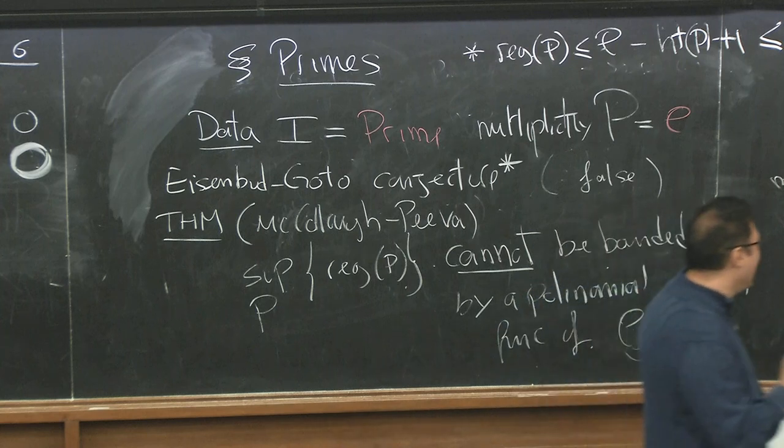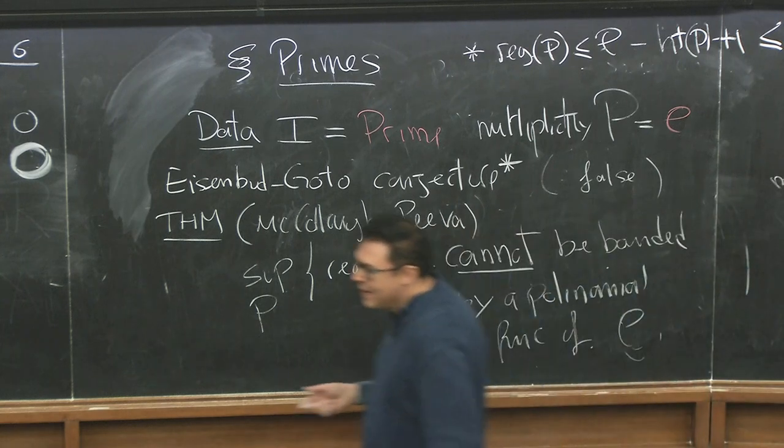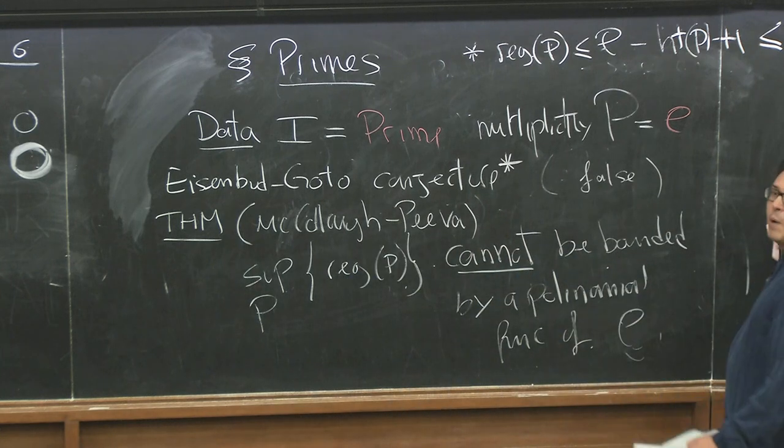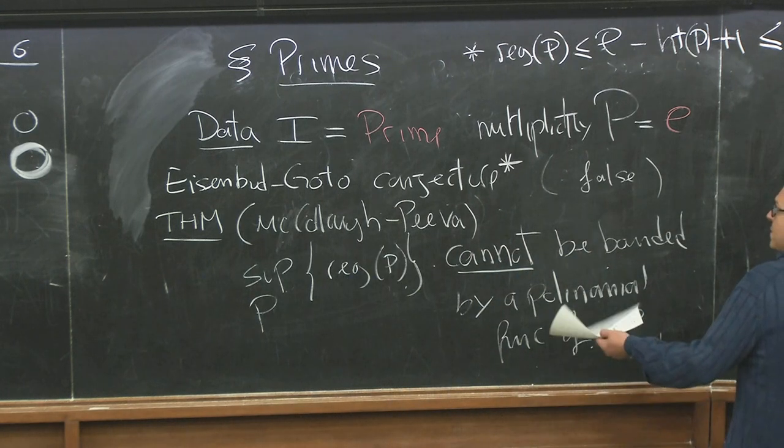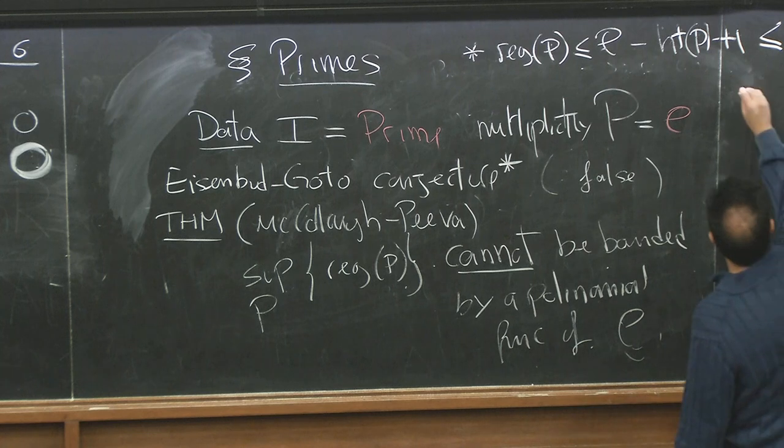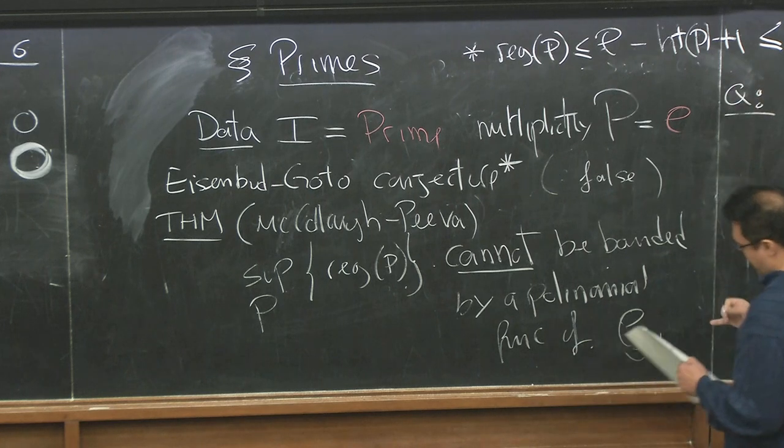What's a good bound? Anything, I'll take anything. And the point is that in their paper, Irena and Jason ask, well, is there a bound at all? Can the regularity be bounded, not even like that, but by anything, as a function of the multiplicity? Question: is there a bound at all?